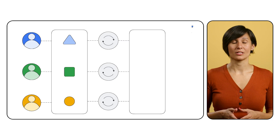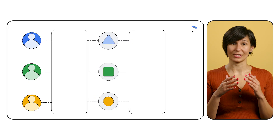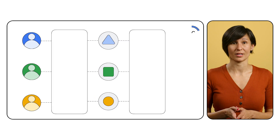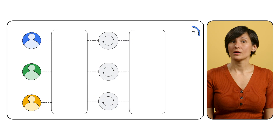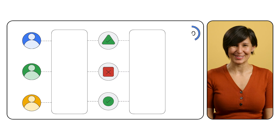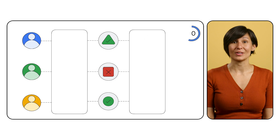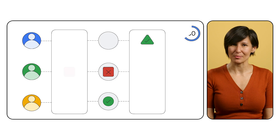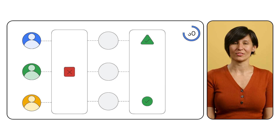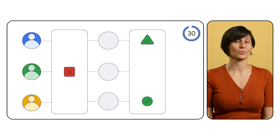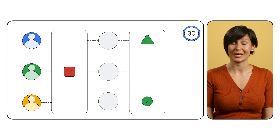You might be saying continuous integration sounds like an awesome tool, but what is it? At its core, continuous integration is the process of developers frequently merging their coding changes into a central repository. After each new change is submitted, an automated process kicks off to build and test the code. This allows multiple developers to integrate their code for the same LookML project simultaneously without creating conflicts or introducing errors into the production environment, ensuring business users get clean validated data to analyze and explore.